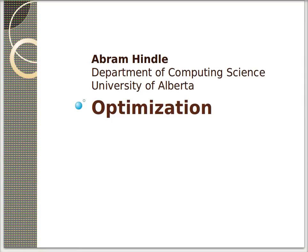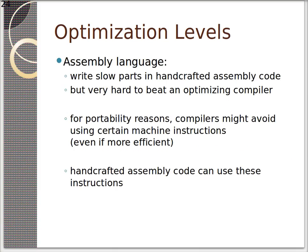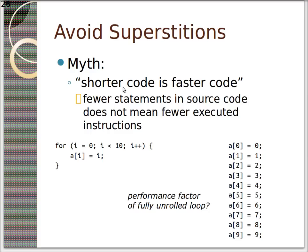Hi and welcome back to our talk on optimization. So we just talked about optimization levels ranging from optimizing compilers to assembly language to hardware. But one important thing with optimizing is we should avoid superstitions. So you might have a myth like shorter code is faster code. Fewer statements in source code don't necessarily mean fewer executed instructions or faster code.